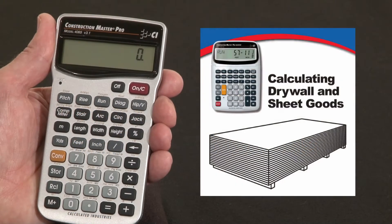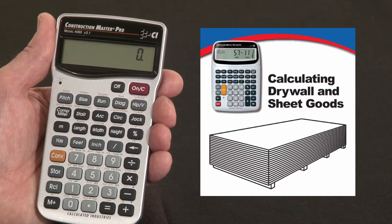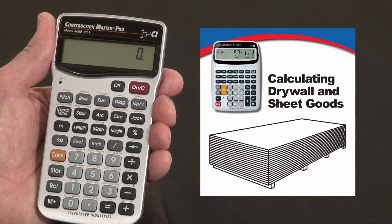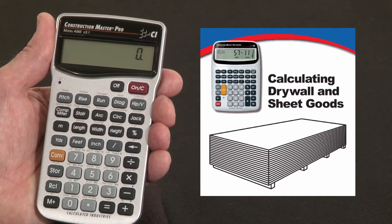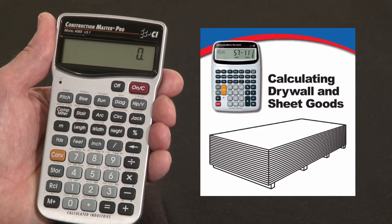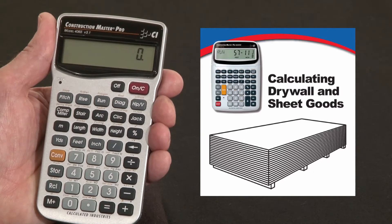Now let me show you how to calculate the number of sheets of drywall or any sheet goods using the Construction Master Pro. Keep in mind the keystrokes will be exactly the same for those of you using the desktop model. This calculation is based on the square footage of coverage needed.